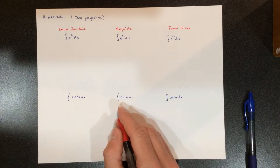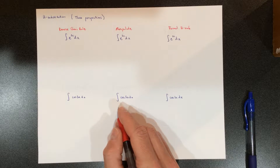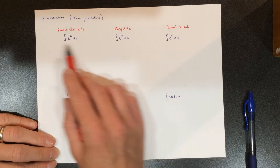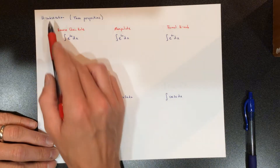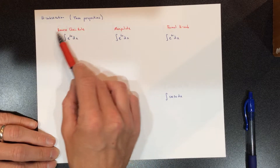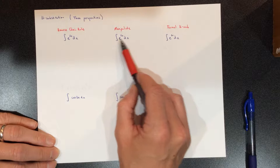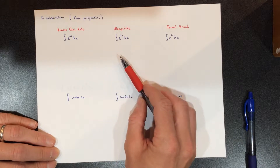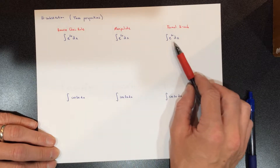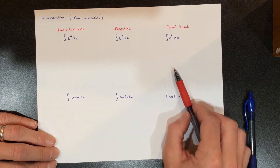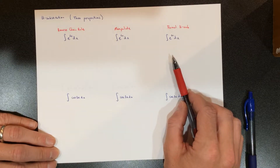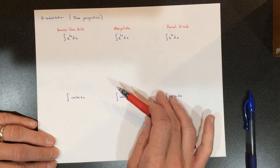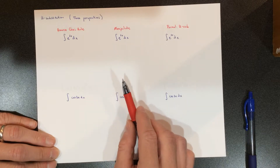I'm going to walk you through U substitution and give you three different perspectives on it. They're all the exact same thing and will give us the same answer. Sometimes we'll do the reverse chain rule if something is really easy. Sometimes we can manipulate it from the get-go and make it right into u·du. And sometimes we have to go through the whole traditional formal U substitution process. I'll do all of these examples in three perspectives, and you can pick which way works best for you.